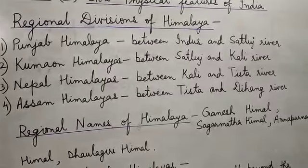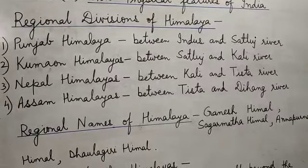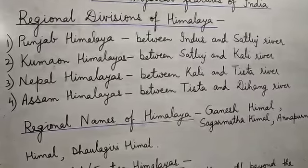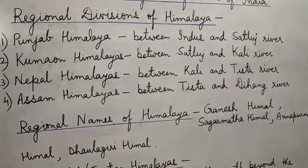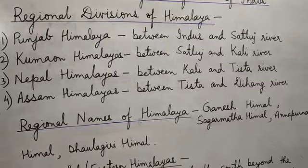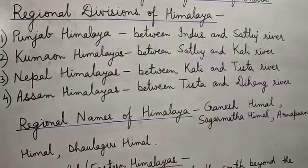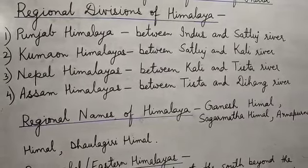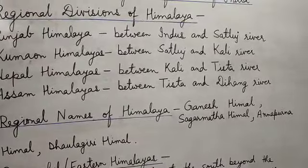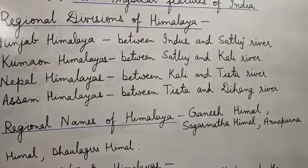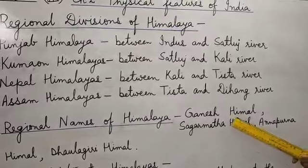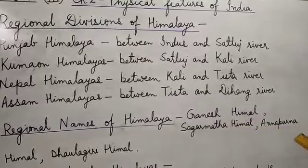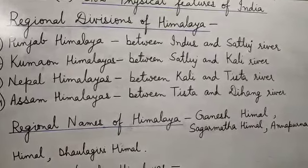After this, the Himalayas take a sudden southward turn after the Dihang Gorge, and the hill ranges run in a more or less north-south direction along India's border with Myanmar — that is known as Purwanchal. Some important regional names of Himalaya include the Ganesh Himalaya, the Sagarmatha Himalaya, the Annapurna Himalaya, and the Dhaulagiri Himalaya.